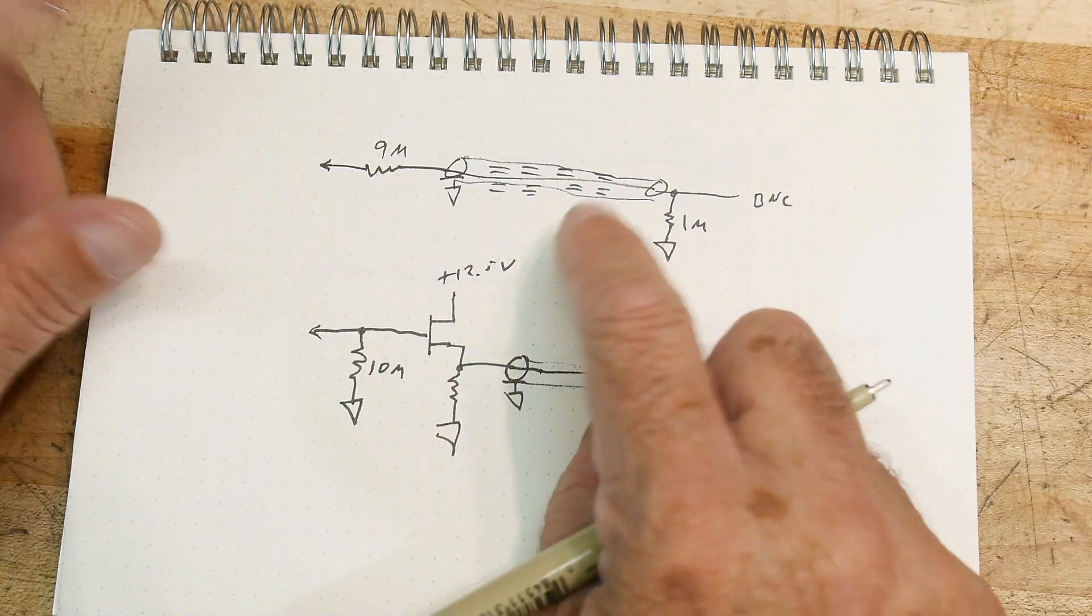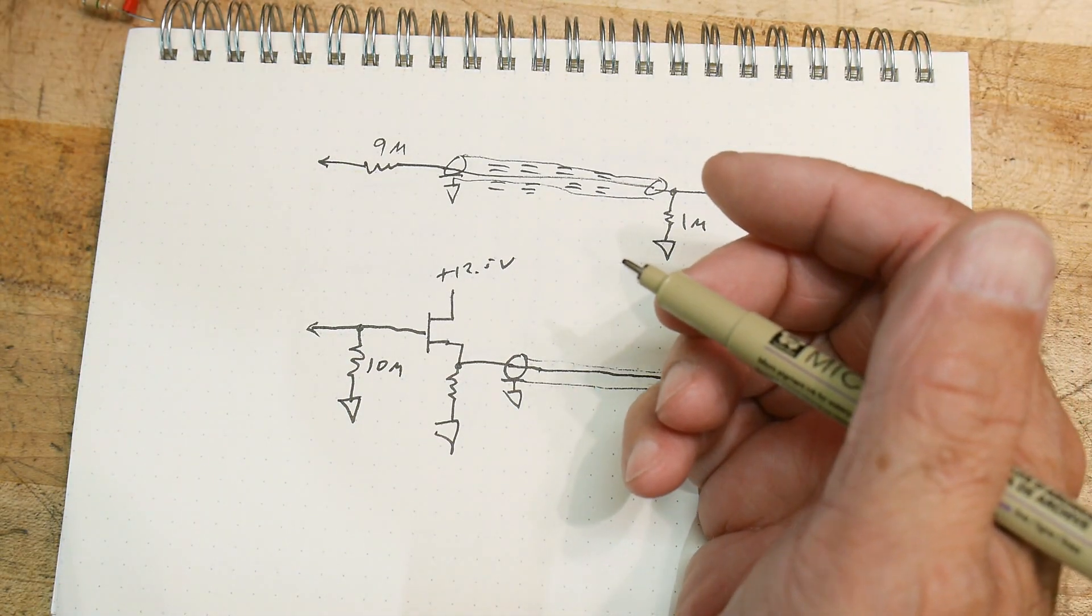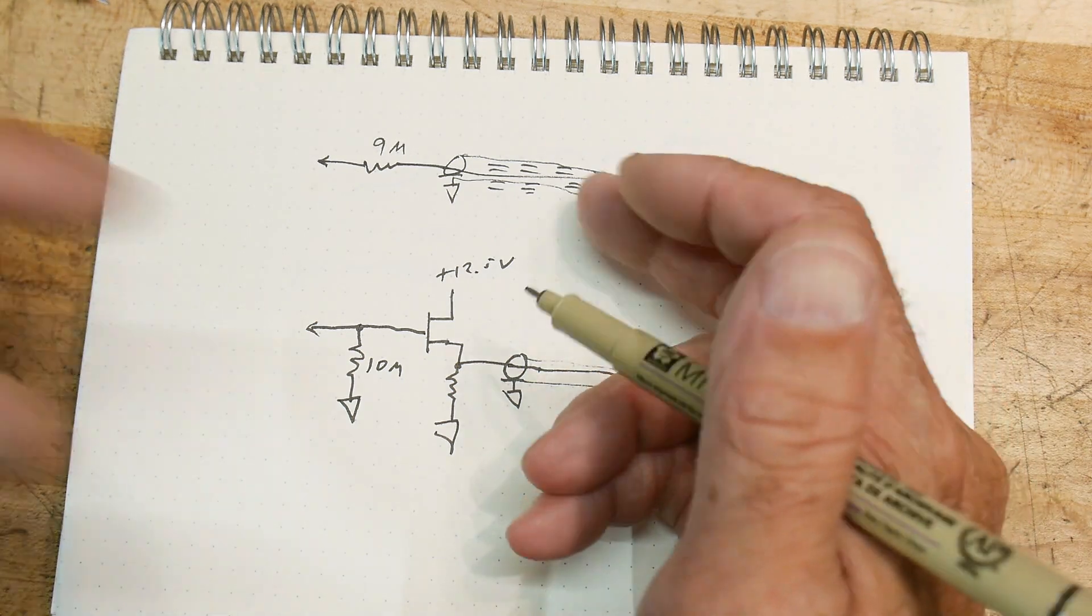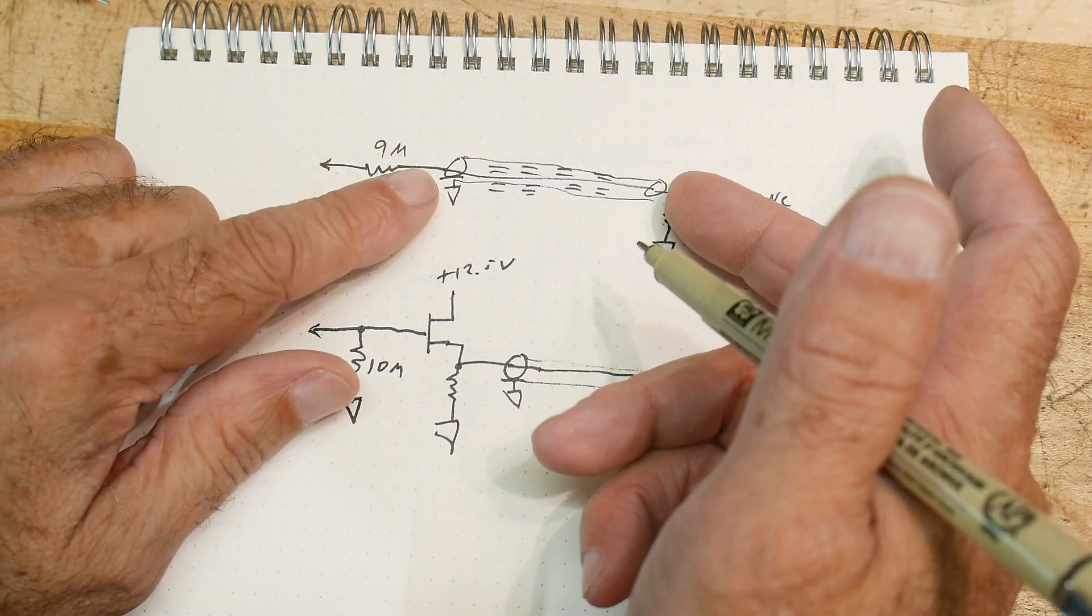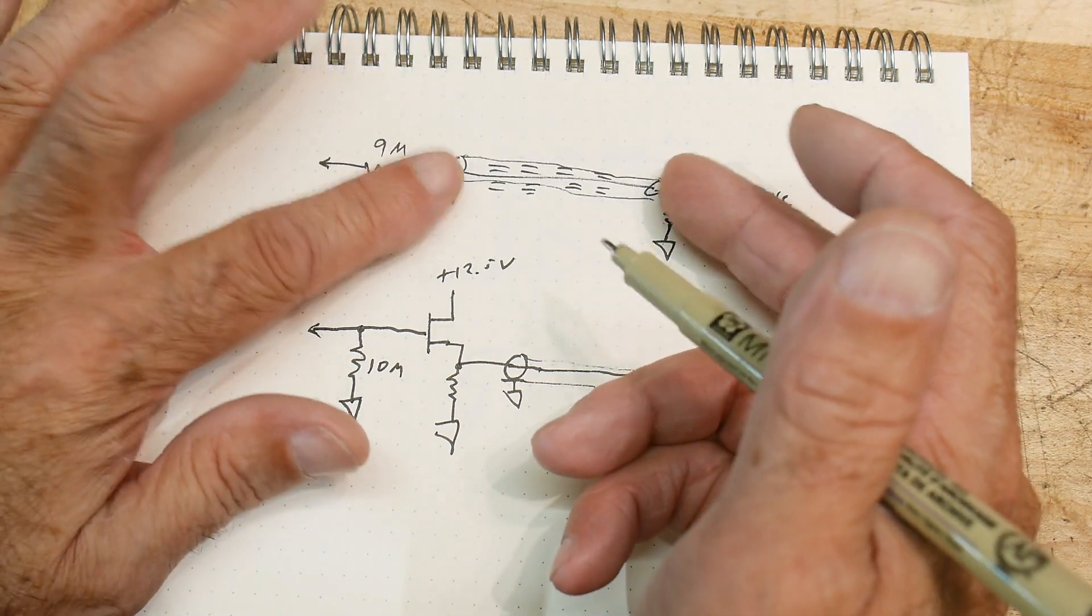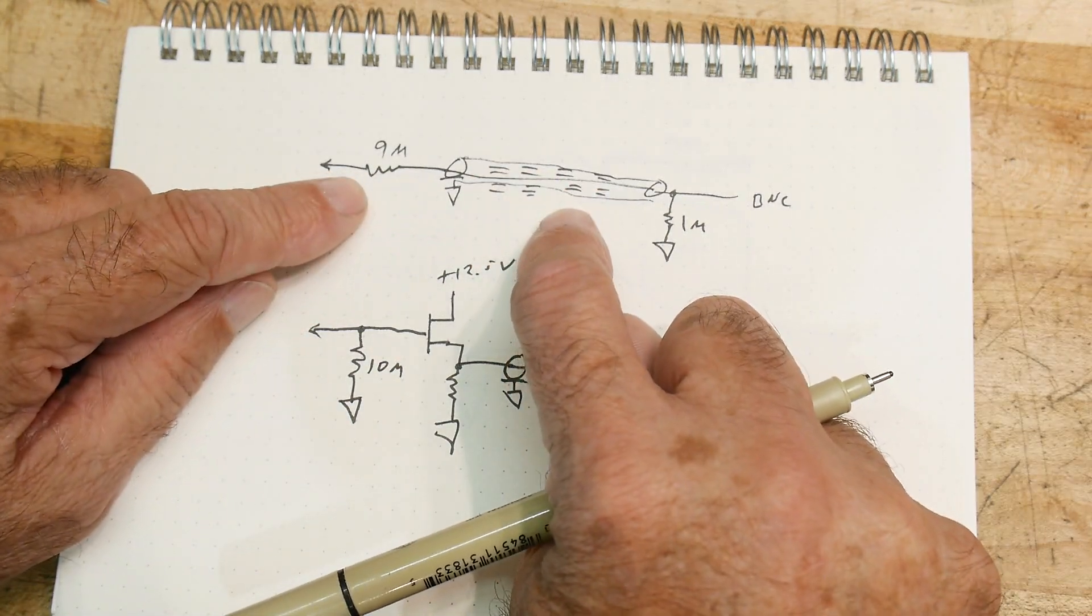So it's how many picofarads per foot of scope probe. So the longer the probe, actually the worse this capacitance gets. But there's a bunch of capacitance in the coax that loads the circuit down. It's this R and the C that creates a roll-off.